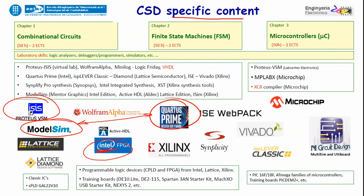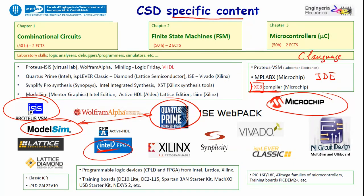We can also use Microchip chips with the MPLAB X integrated development environment for microprocessors, along with the free version of the XC8 compiler, enabling us to use C language. In the same way we are choosing Intel tools, we could choose Xilinx tools or Lattice tools and many other microprocessor manufacturers — this is just an example of tools for introductory purposes.